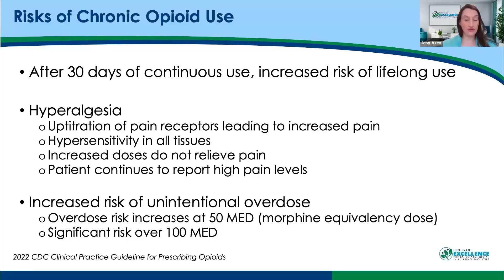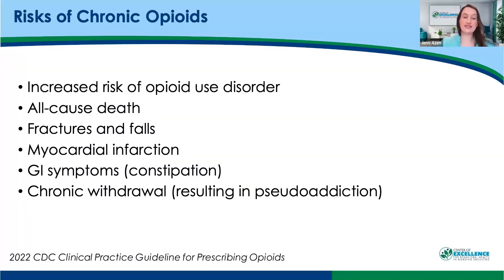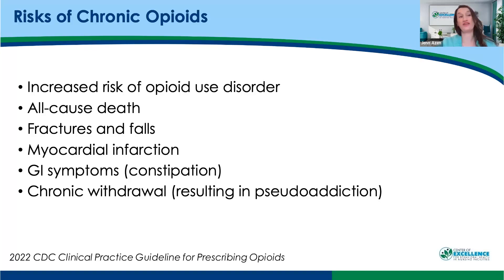There's also an increased risk of overdose when you have a morphine equivalency of 50 — that's less than 30mg of oxycodone. At about 65mg of oxycodone morphine equivalency, there is an increased risk of death. You also want to review all-cause death, which includes increased risk of fractures, increased risk of myocardial infarction, constipation, and chronic withdrawal — where residents feel miserable because they're in some sort of withdrawal at all times.